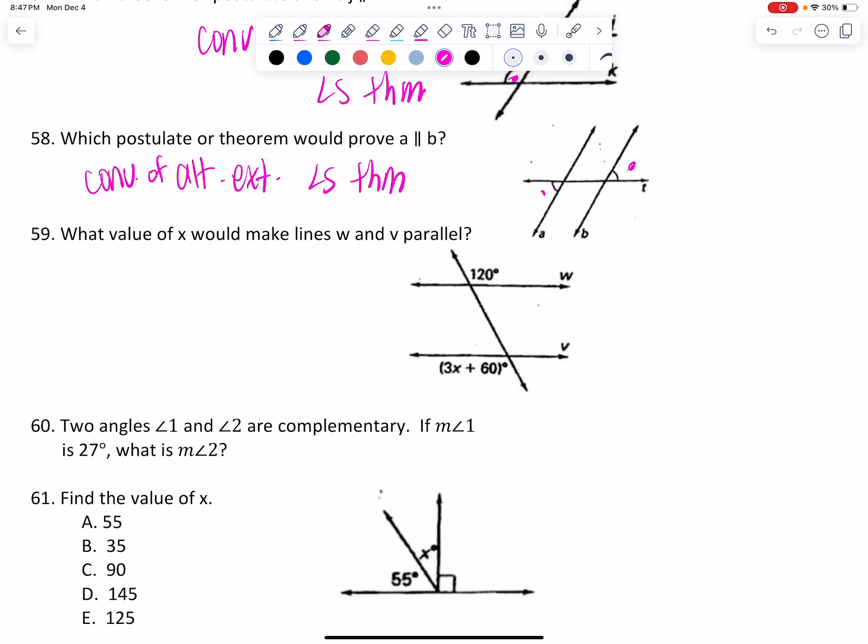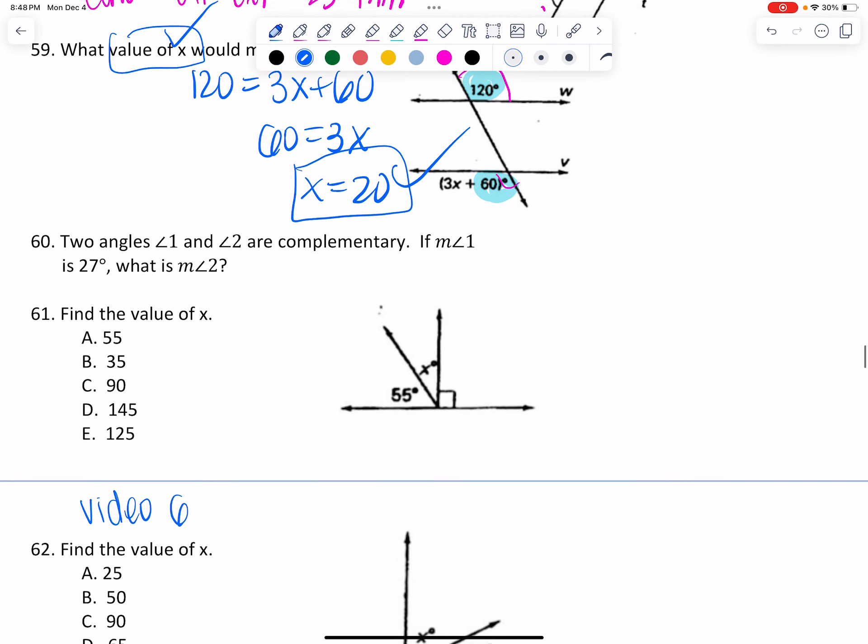What value would make these parallel? These are alternate exterior. So again, they're going to be congruent. You can tell that they're going to be congruent, not supplementary, because this is obtuse and this is obtuse. So I'm going to set those two expressions equal. 120 should be equal to 3X plus 6, if these lines are going to be parallel. And so I'd get 60 equals 3X. And so X equals 20. What value of X would be that? That is what I just found. So make sure you're finding the right thing.